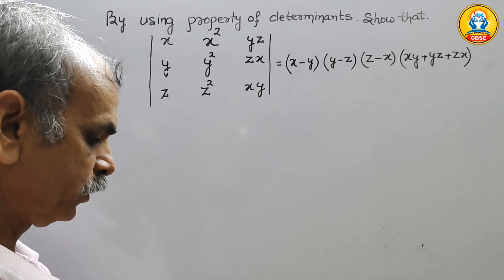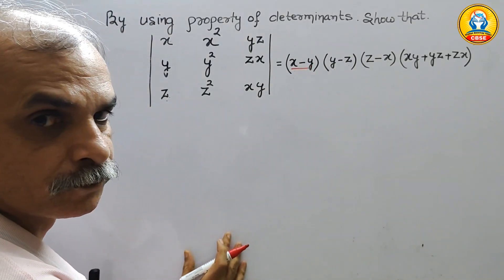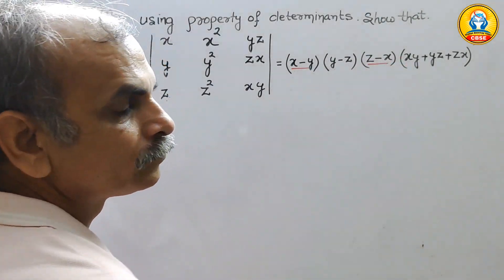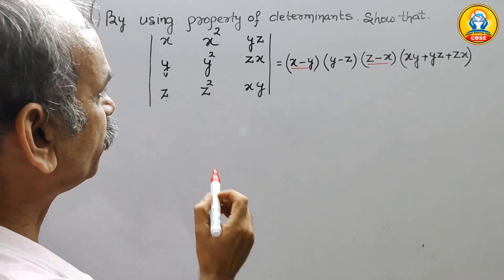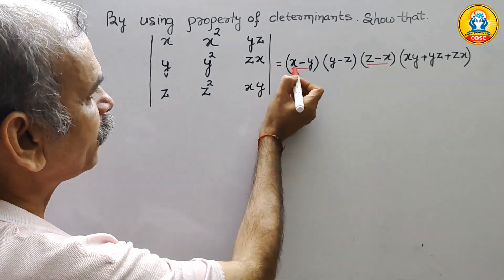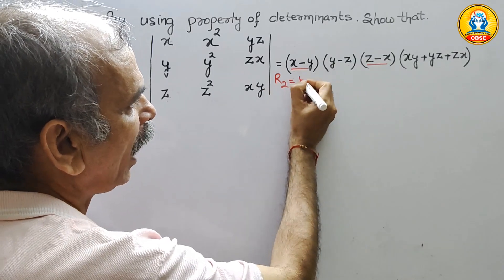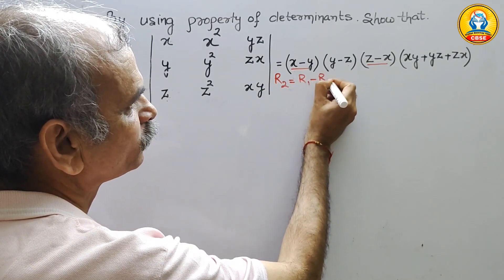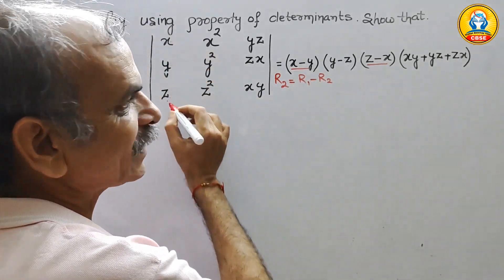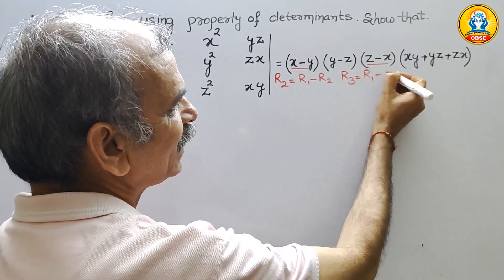So here what we have to do — first we will try to solve this. We can see that x minus y appears first and z minus x appears second. Here what we have to do: we will make the first row the master row. So it will come as x minus y, meaning R2 is equal to R1 minus R2, and R3 is equal to R1 minus R3 for the z minus x term.